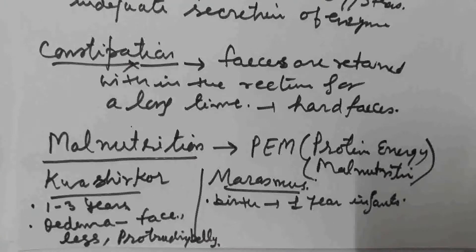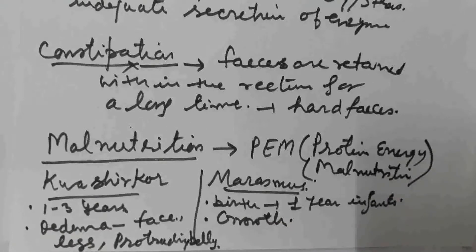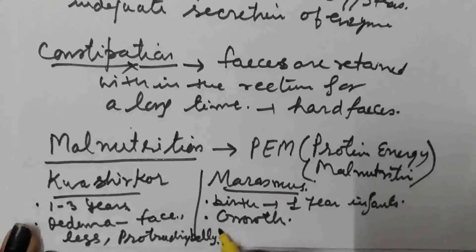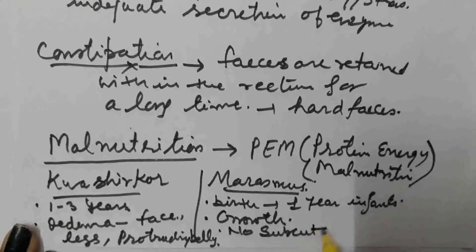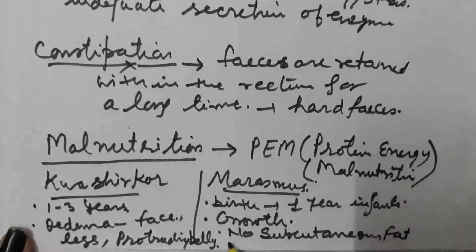Marasmus birth se lekar one year ke infants mein hota hai. Isme growth stunted hoti hai, growth reduce karegi. Isme carbohydrate and fat ki deficiency rehti hai, toh body mein jo fat hota hai woh bilkul khatam ho jaata hai, kahin bhi fat deposit nahi rehta, totally consume ho jaata hai, toh body bilkul thin out ho jaati hai. Is case mein jo ribs hoti hain woh bilkul exposed ho jaati hain and we can easily count the ribs of a marasmus infant. Skin ke neeche bilkul bhi fat deposit nahi hoga — no subcutaneous fat. Body is thin out and ribs are bulging out, ribs are exposed.